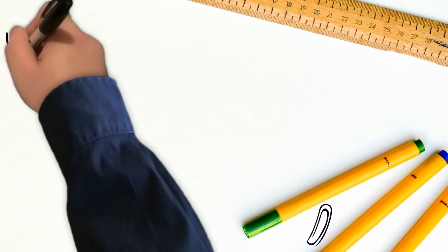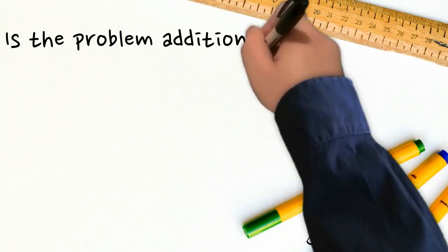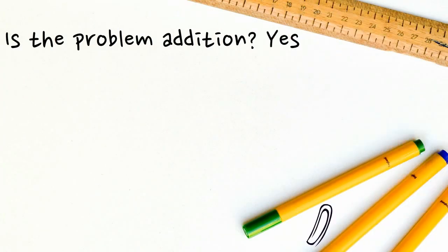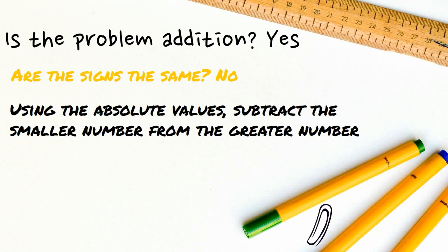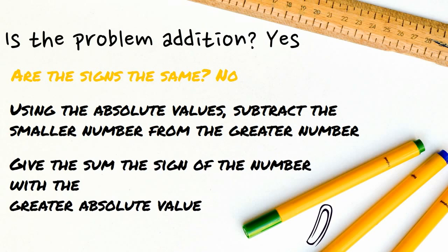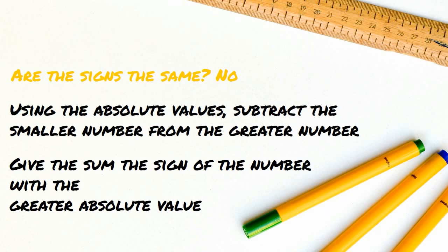If the problem is addition but the signs are different, then using the absolute values, subtract the smaller number from the greater number. Give the sign of the number with the greatest absolute value.